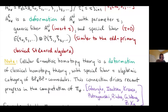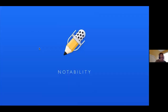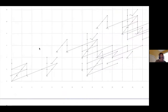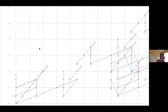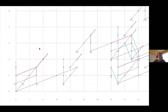Let's look at some C-motivic Adams charts to show some of the exotic features that appear. In this C-motivic Ext chart, the things in black are exactly the same as the classical Ext, and the things in color are exotic phenomena.